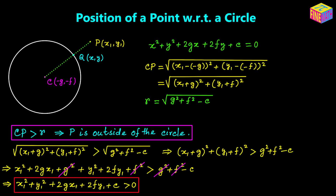Now let's think about the minimum distance and the maximum distance of P from the circle. The nearest point on the circle to P is point Q — that is the nearest point. So the minimum distance between P and the circle is PQ. If we extend PC to the other side of the circle, suppose it meets the circle at point R with coordinates (x₂, y₂) — those are unknown and we need to calculate them.